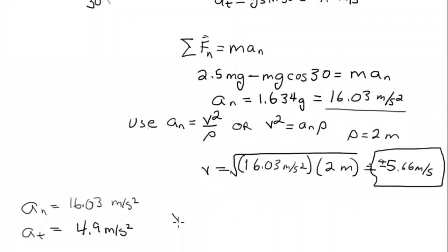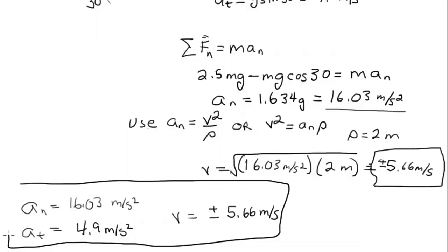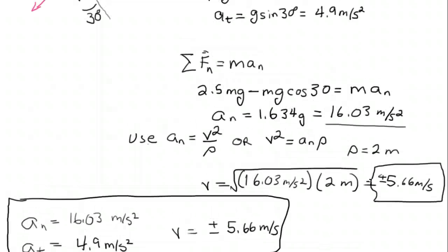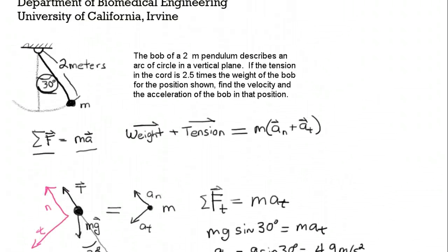And then of course for the velocity, we have right here, plus or minus 5.66 meters per second. So there's our solution, the two components of the acceleration. The acceleration is a vector. So we've got two components in two orthogonal directions. And the velocity is also a vector. So it's either plus or minus.